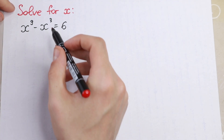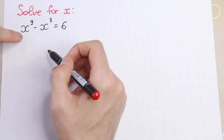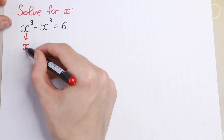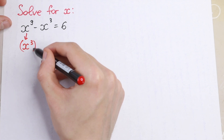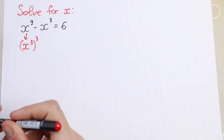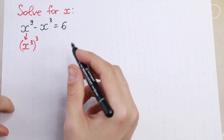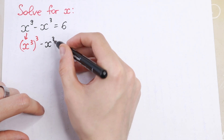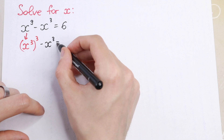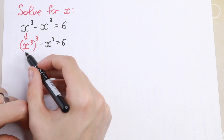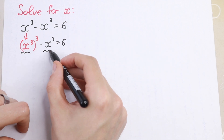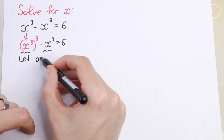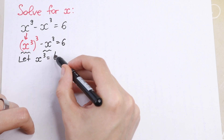So first of all we have x cubed right here, and x to the 9th power is really good to express as x cubed to the 3rd power. So we can easily express it as x cubed to the 3rd power, minus x cubed, equal to 6. Since we have x cubed in both places, we can write a substitution: let x cubed equal to t.